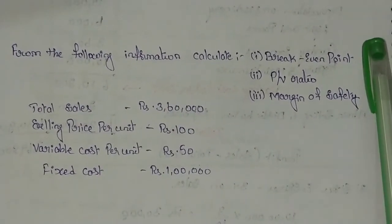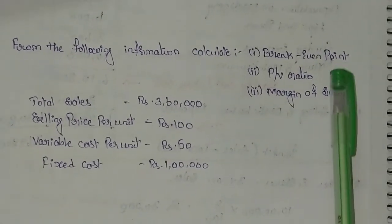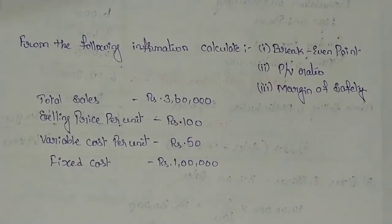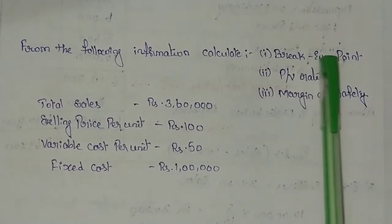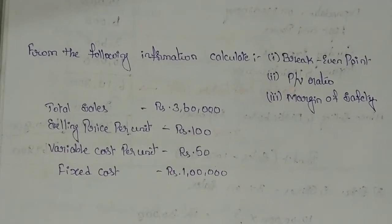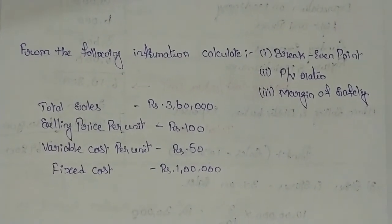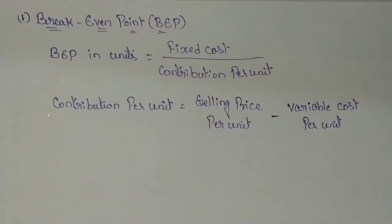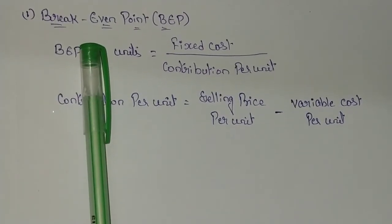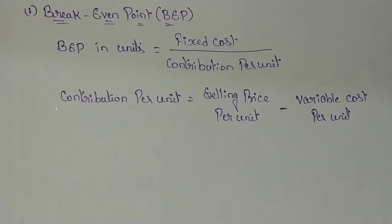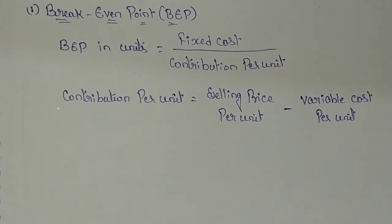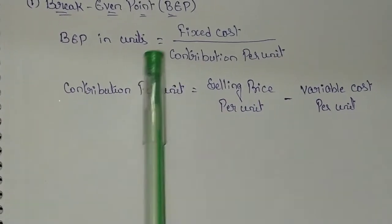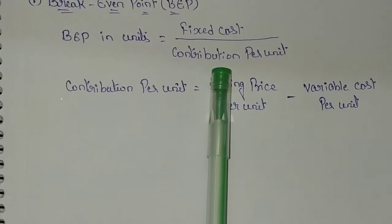With this information, you should calculate all these things. They have asked to calculate breakeven point, but have not mentioned whether it is in units or in sales volume. So we will go for calculating breakeven point both in units as well as in sales value. The formula for calculating breakeven point in units is fixed cost divided by contribution per unit.